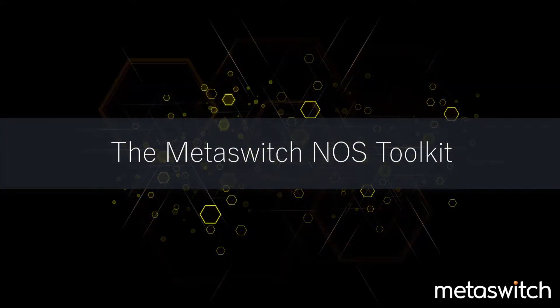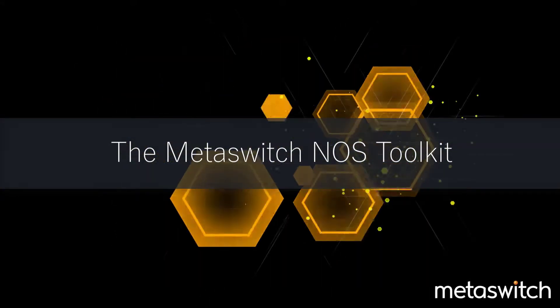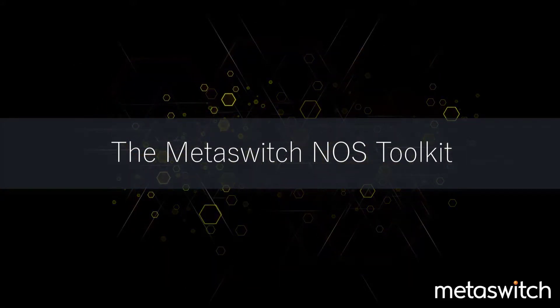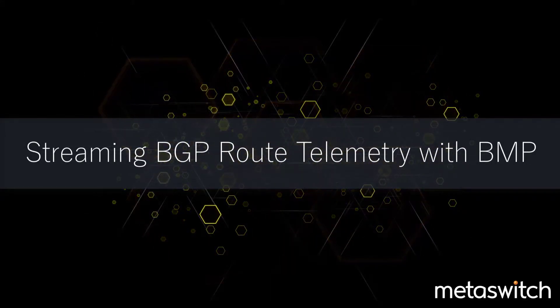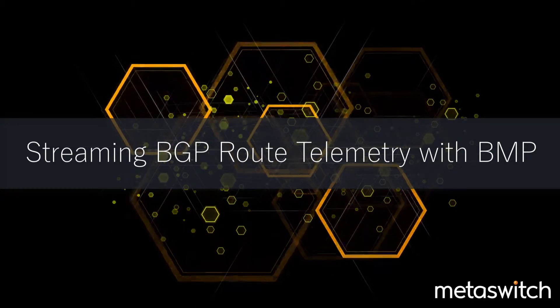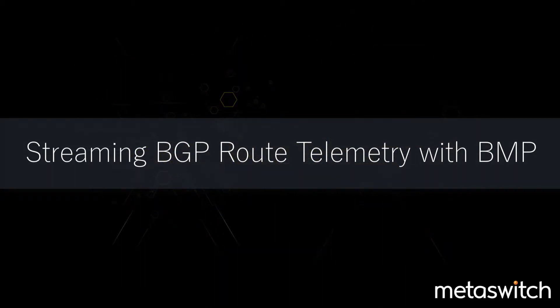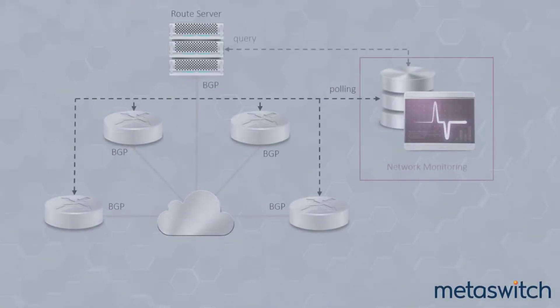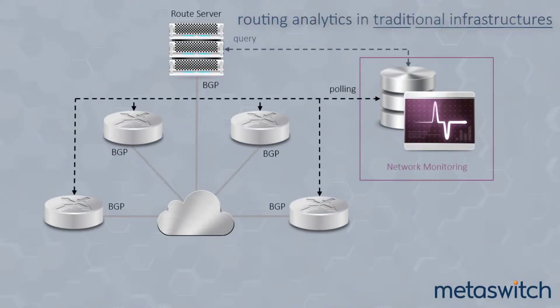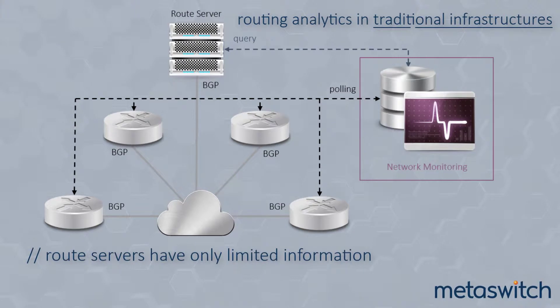To fully understand why their complex BGP routing infrastructures are behaving in a particular way, network architects must continually scrutinize its operation. Getting the information required to make an intelligent diagnosis and perform the appropriate corrective or preventative action within a reasonable timeframe has been practically impossible. Classic solutions, such as BGP route servers, only have limited information, such as the routes advertised — there's no indication of why they were ultimately chosen.